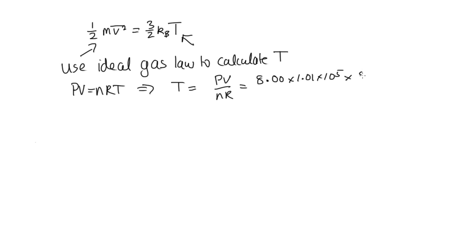And now we're given that the volume is 5 liters, and we need the volume in meters cubed. So that's 5 times 10 to the minus 3. That's because there's 1,000 liters in a meter cubed. And then we need to divide by n, which we were told is 2, and R is the gas constant, 8.314.